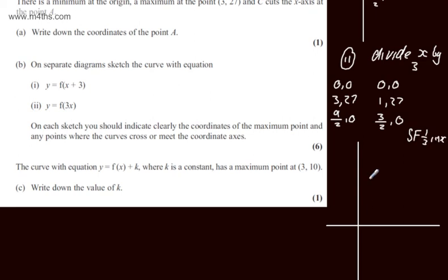So we have the points now. We've got 1 comma 27, which is going to be just here. We've got 0, 0, which is the origin. And then we've got the 3 over 2 comma 0, which is just there.